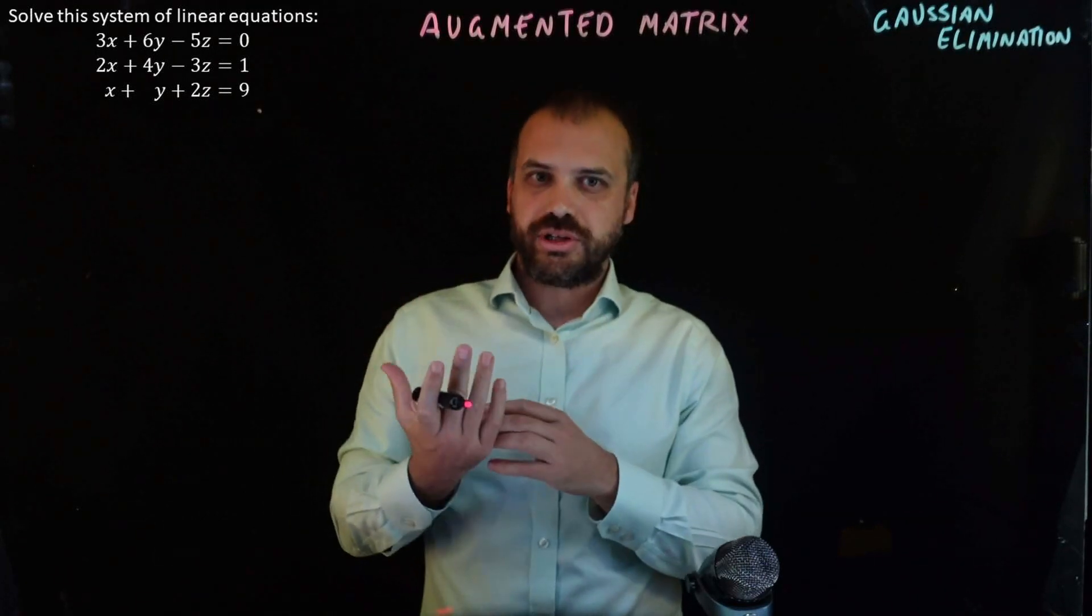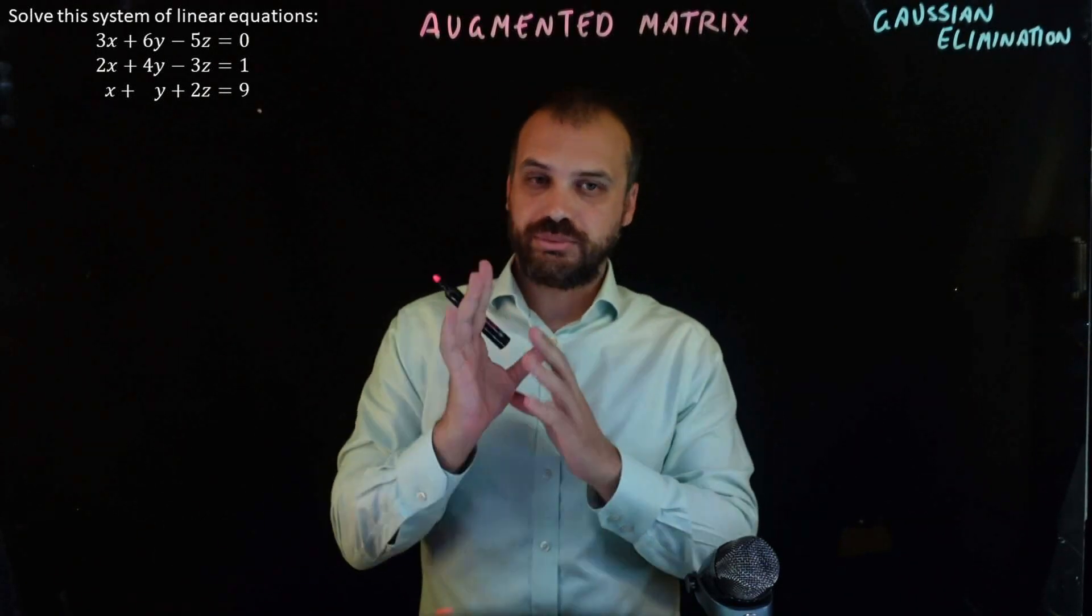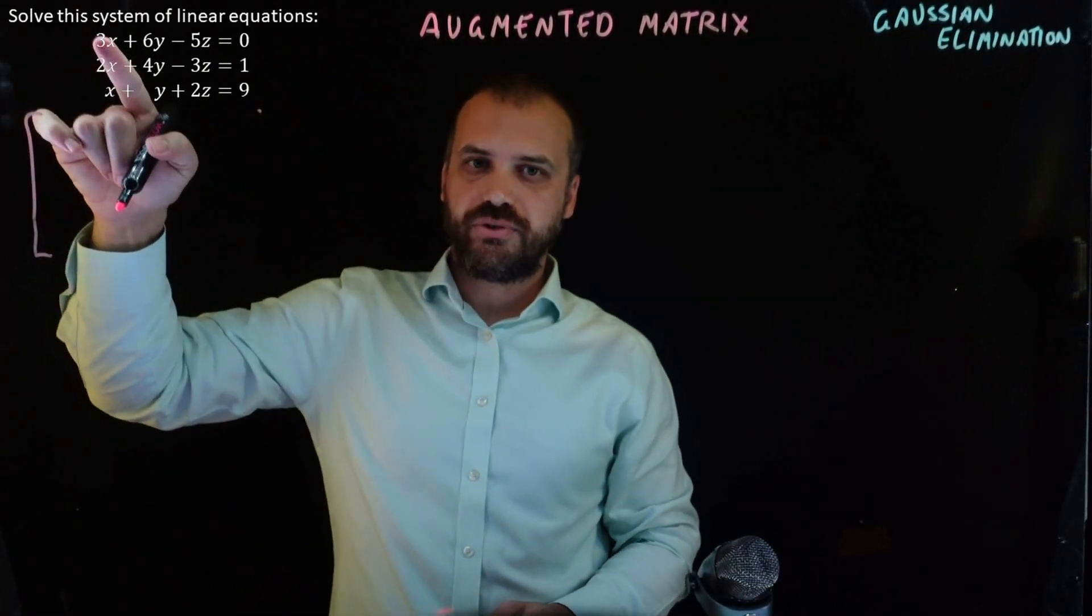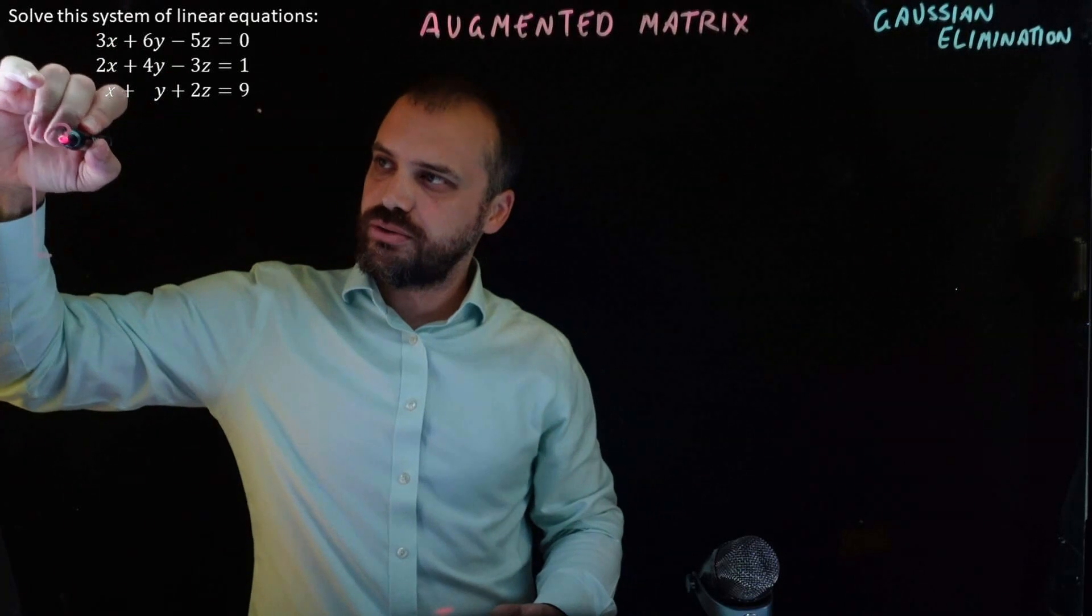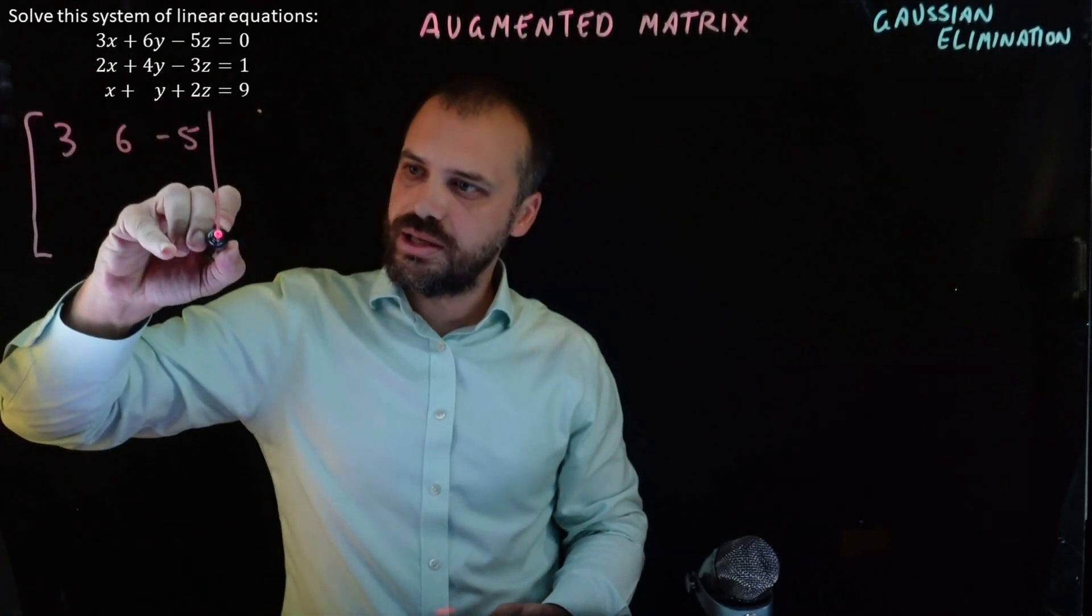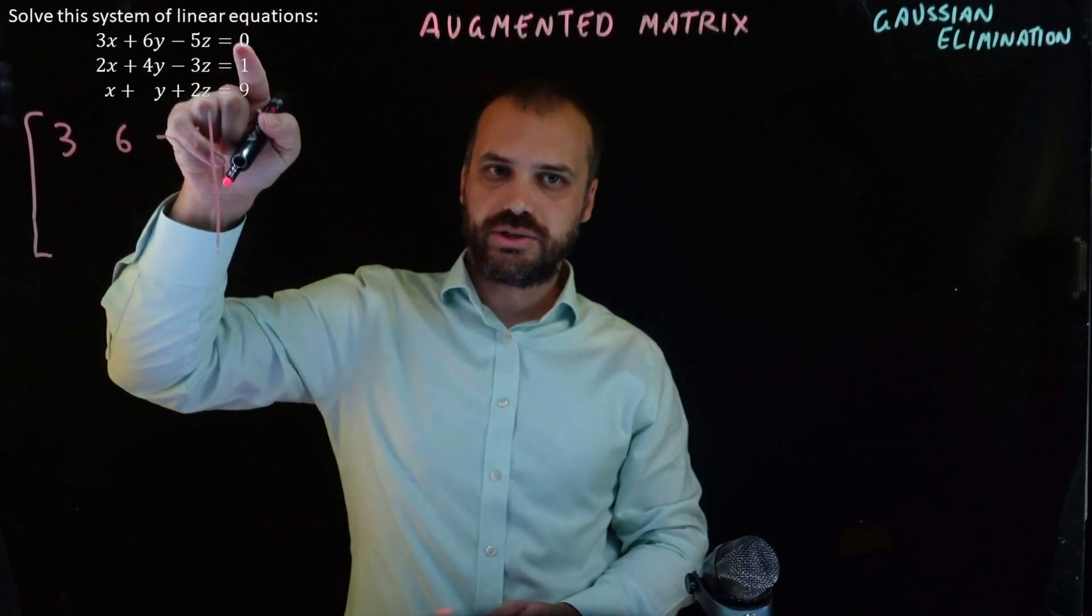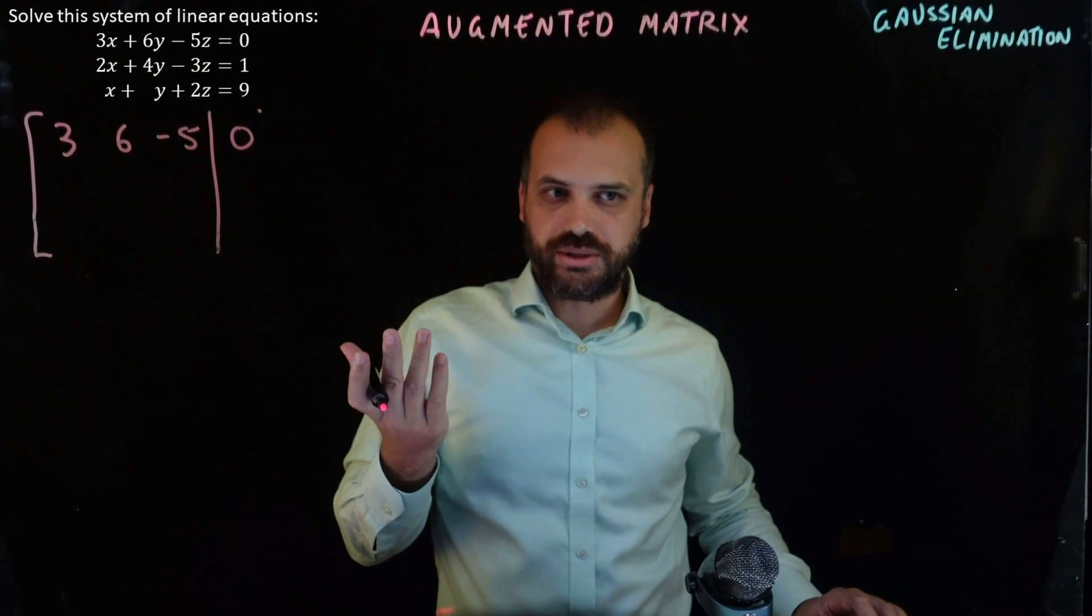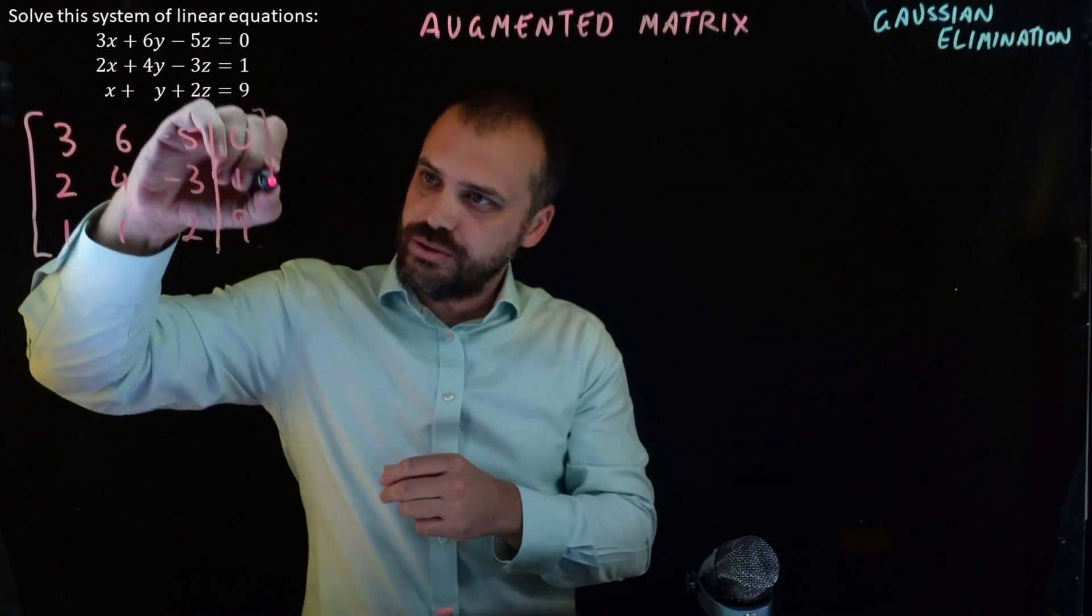So rather than trying to give you a definition of an augmented matrix, I'm just going to draw it for you. It's going to make a lot of sense. So we look at our first equation right here, and we go 3, 6, negative 5. We put a line here like this, and we put our solution 0. And we do that for all the other ones as well. And don't forget to close it up.